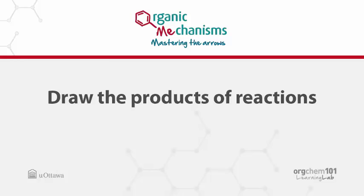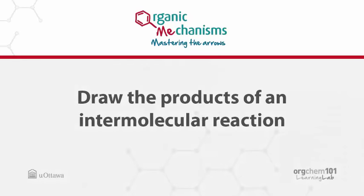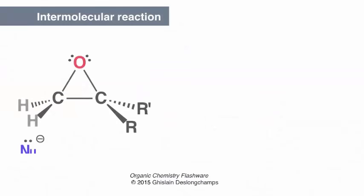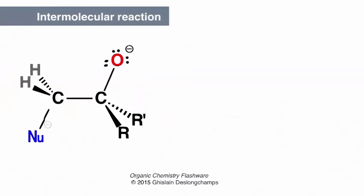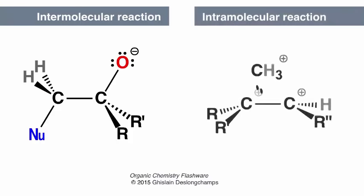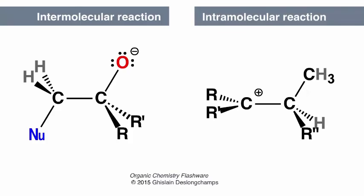In this video, you'll learn to draw the products of reactions, given the starting materials and electron pushing arrows. In the first section, you'll draw the products of an intermolecular reaction. Intermolecular reactions take place between molecules, while intramolecular reactions take place within a single molecule.